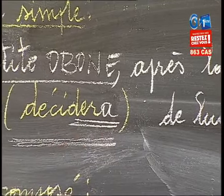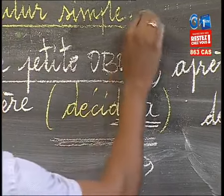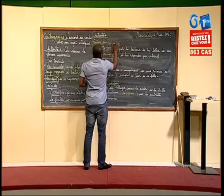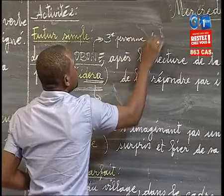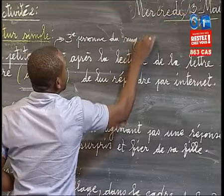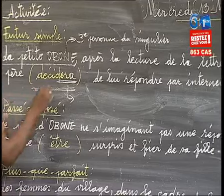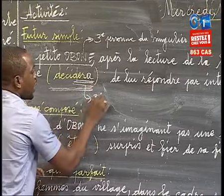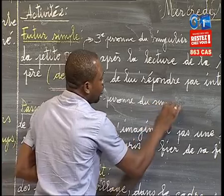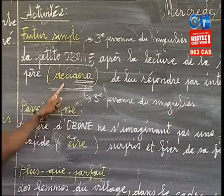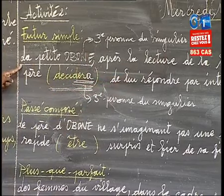Voici notre verbe conjugué. Le verbe est conjugué avec le sujet « la petite Abono » qui appartient à la troisième personne du singulier. Dans la conjugaison du verbe, nous avons dit « décidera ». La terminaison de « décidera » est elle aussi conjuguée à la troisième personne du singulier. On remarque alors que le verbe « décidera » est en accord en personne et en nombre avec le sujet, la petite Abono.